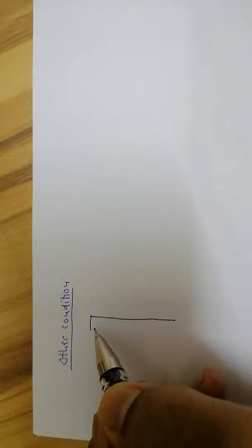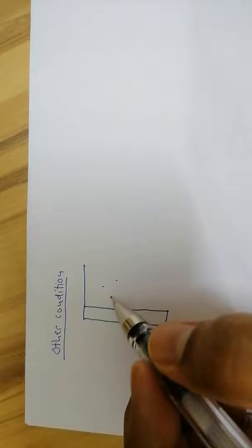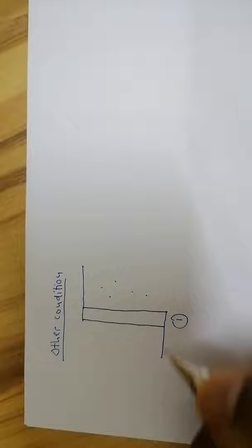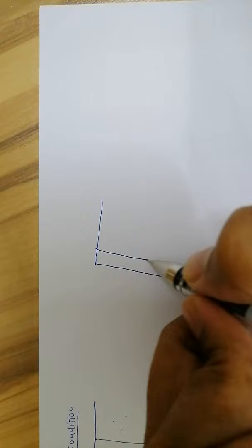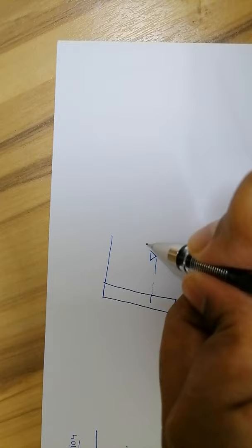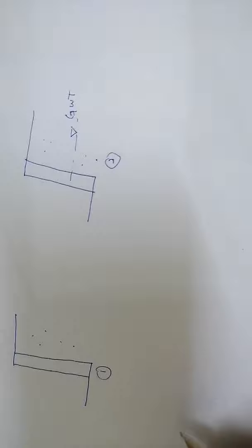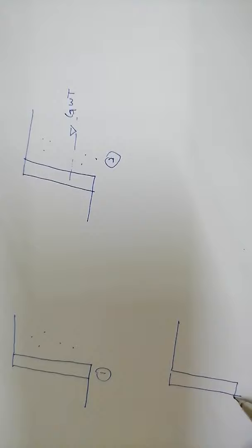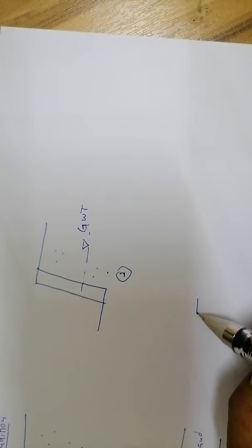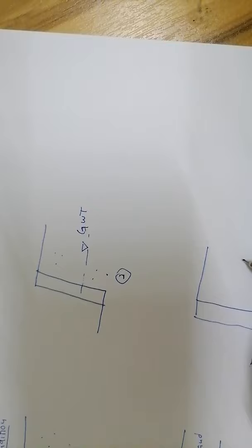Other conditions exist. Condition one: you have a retaining wall with just one type of soil and no groundwater. Condition two — which is close to what we did — you have a retaining wall with groundwater, and both layers are the same sand. Condition three: you have a retaining wall with two different layers — for example, sand on top and clay below, or different types of sand.